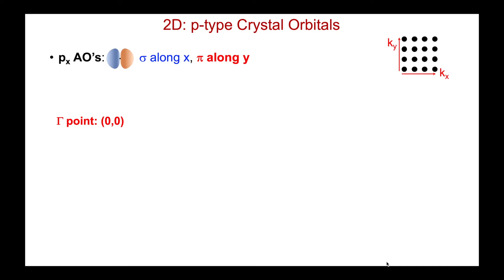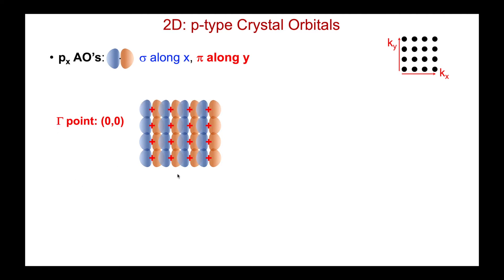At our gamma point, kx and ky are both zero. Looking at kx equals zero first — we're just laying them all down with the same signs, as we've seen before in our 1D system. And now along y, we'll have no sign changes because ky is also zero. We just add all of them with no phase changes. For sigma p interactions along a row, that gives us sigma-star anti-bonding interactions, because despite laying them down with the same signs, the orbital symmetry gives out-of-phase cancellation. Along the y direction, they're overlapping with pi bonding, and because there are no sign changes, those interactions are favorable — they're overlapping in phase and they're bonding.